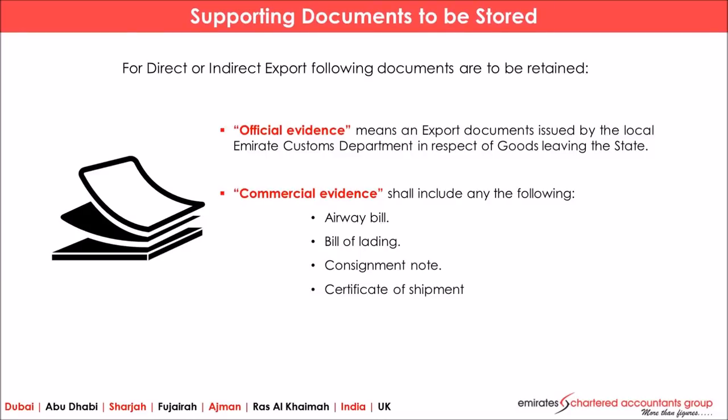To consider any supply as an export, there must be commercial as well as official documents retained by the supplier. An official document is issued by a government authority — here the customs department — as proof that goods are moving from the UAE to outside. Commercial evidence includes documents obtained during shipment, such as an airway bill, consignment note, bill of lading, or certificate of shipment. These must be retained by the exporter to prove those supplies are exports.